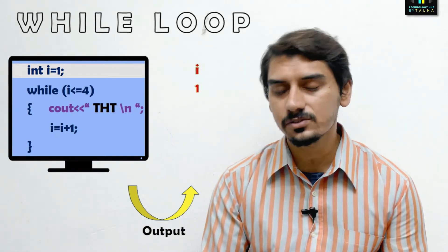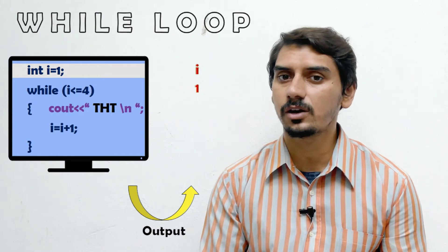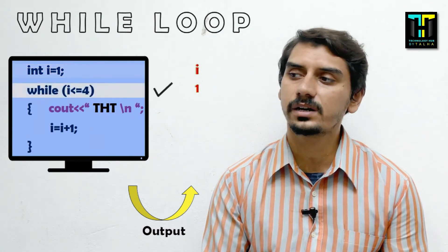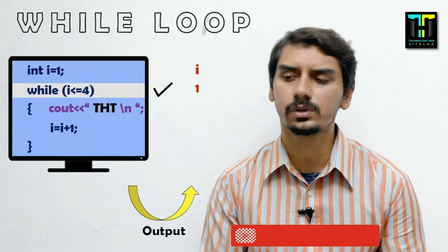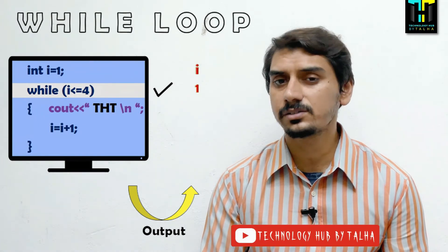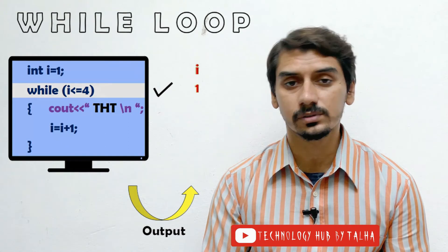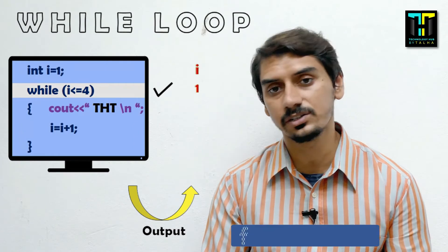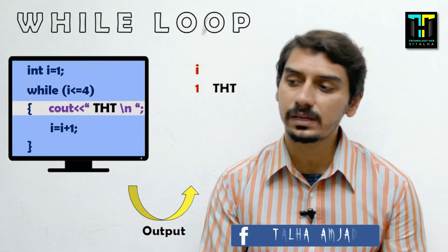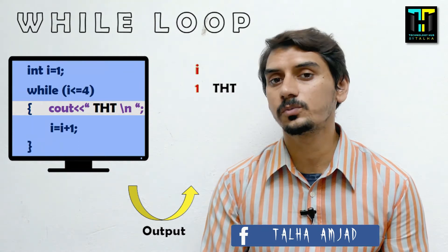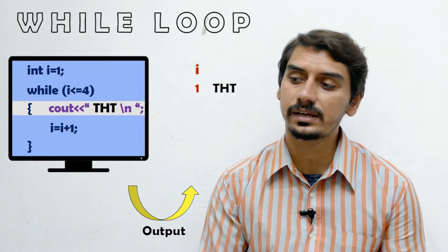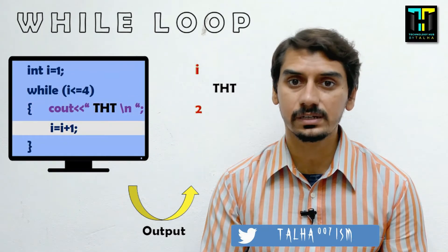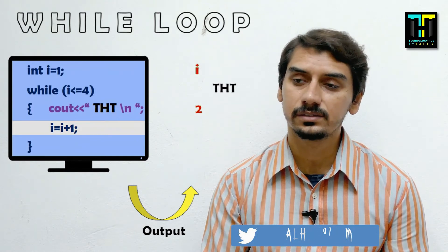First, we initialize i = 1. The while condition is i <= 4 — since 1 <= 4, the condition is true, so we execute cout tst and the output is 'tst'. Then i = i + 1, so i becomes 2. We check the condition again: 2 <= 4 is true, so we display 'tst' a second time.